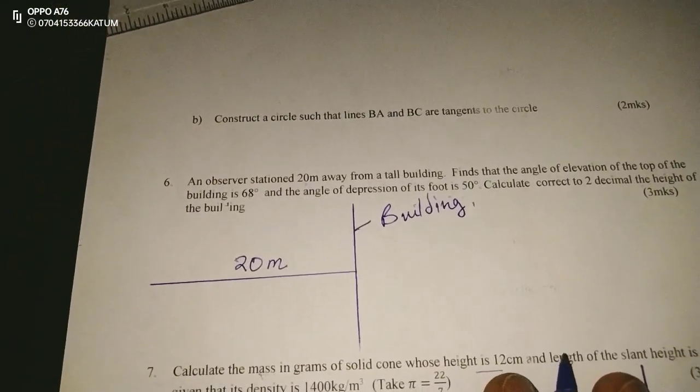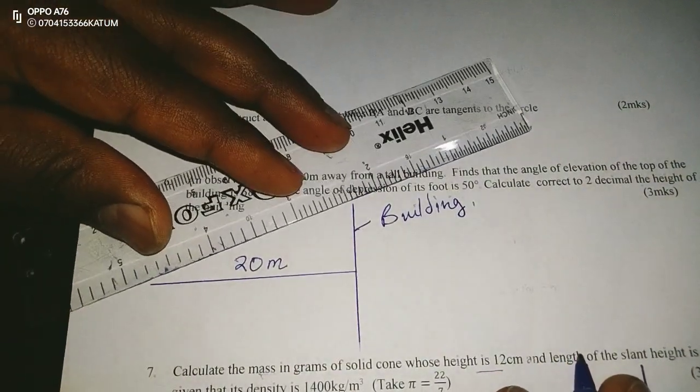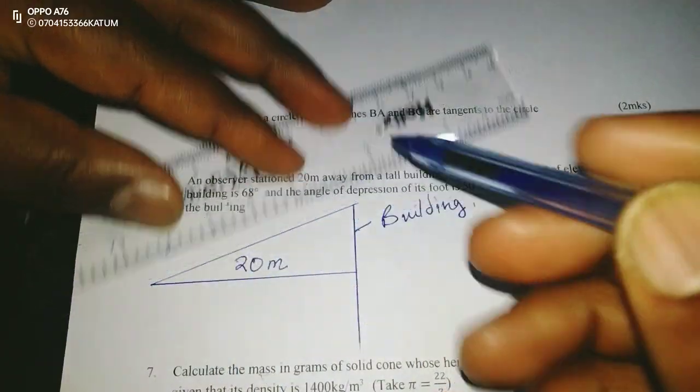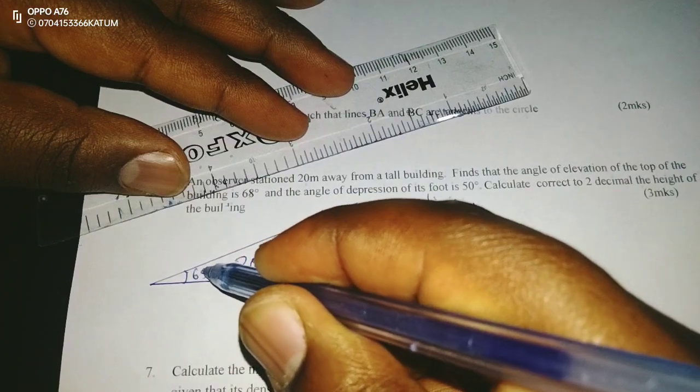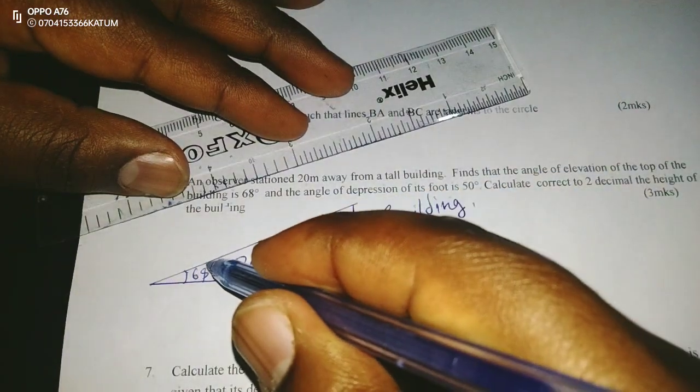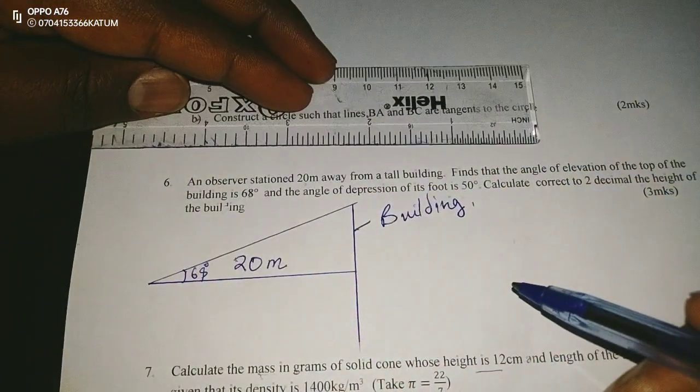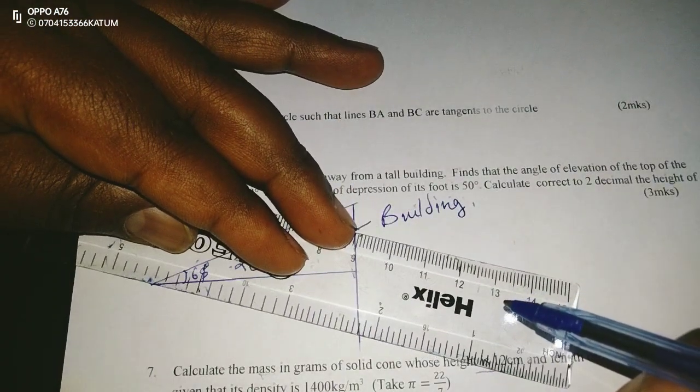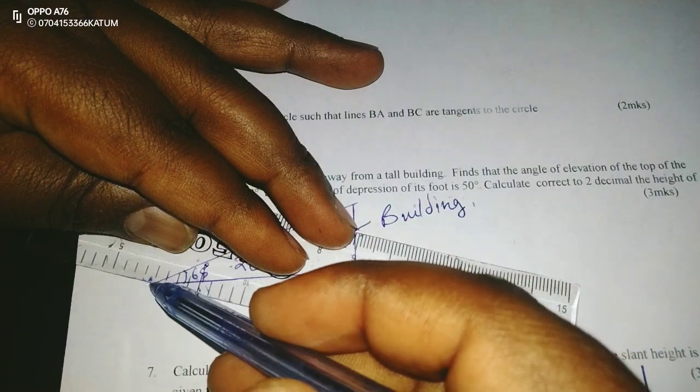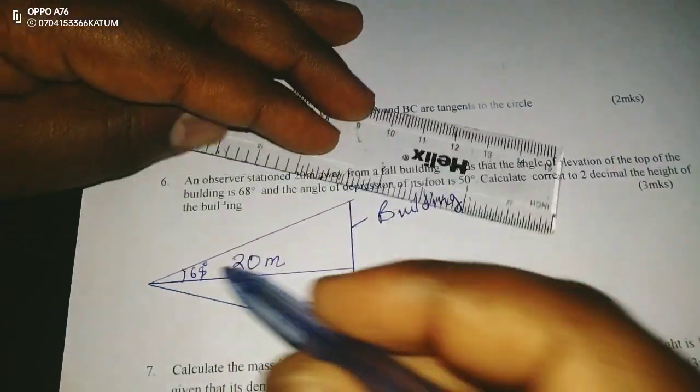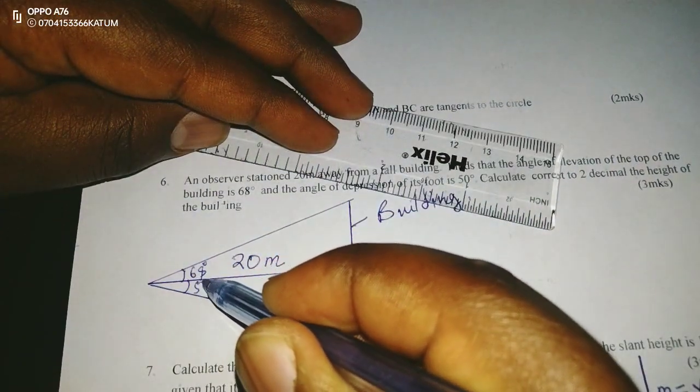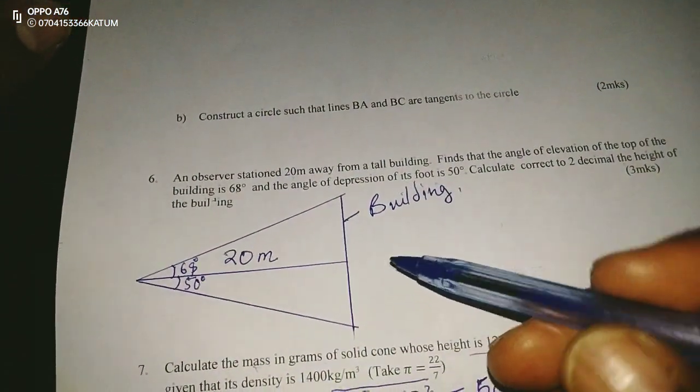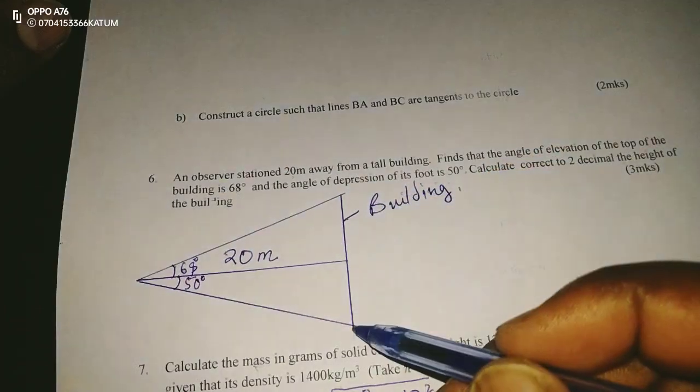20 meters away from this building. Now, this observer is able to observe the top of the building through an angle of 68 degrees and the bottom or the foot of the building through an angle of 50 degrees. Therefore, for us to calculate the total height of the building,